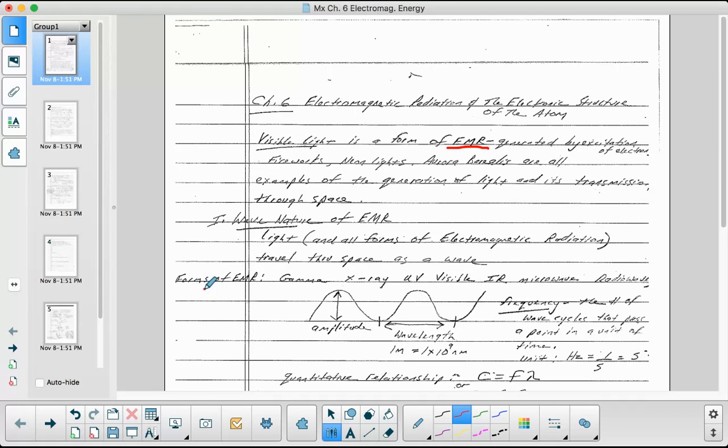The forms of electromagnetic radiation are gamma rays, x-rays, ultraviolet rays, visible light, infrared radiation, microwaves, and radio waves. The model to describe this electromagnetic radiation as a wave is the sine wave, which has amplitude, wavelength, and it also has a frequency.